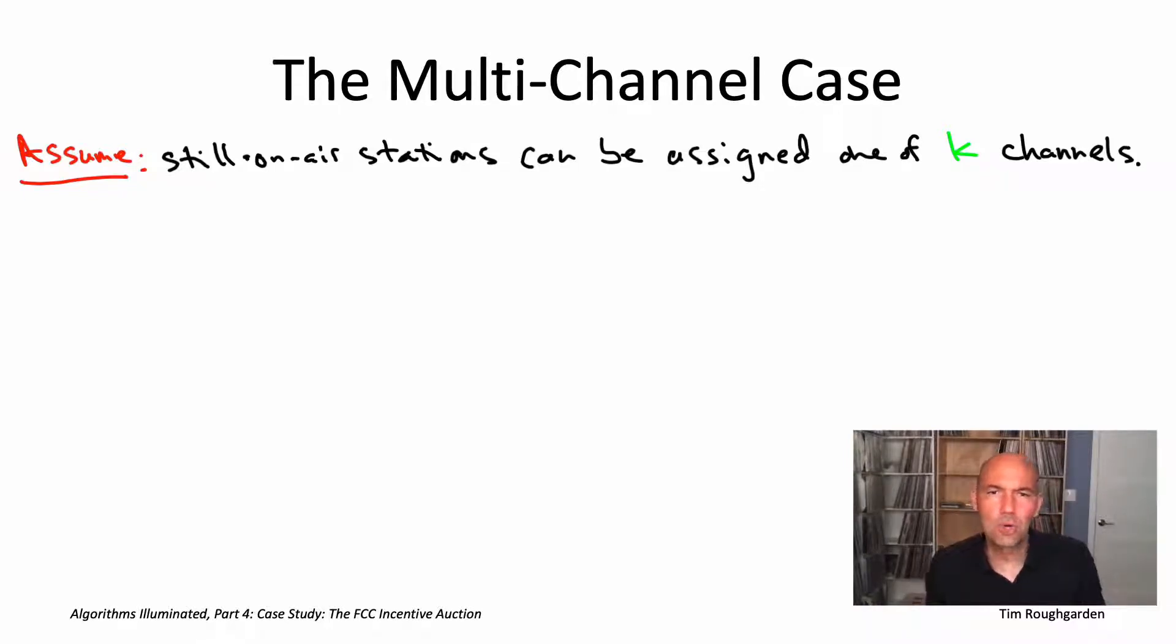So what happens to our general greedy algorithm? Well actually, you stare at the pseudocode and you're like, why can't we just copy down that exact same pseudocode for this more general problem with multiple available channels? Here's what it would look like. Let's call it FCC greedy.